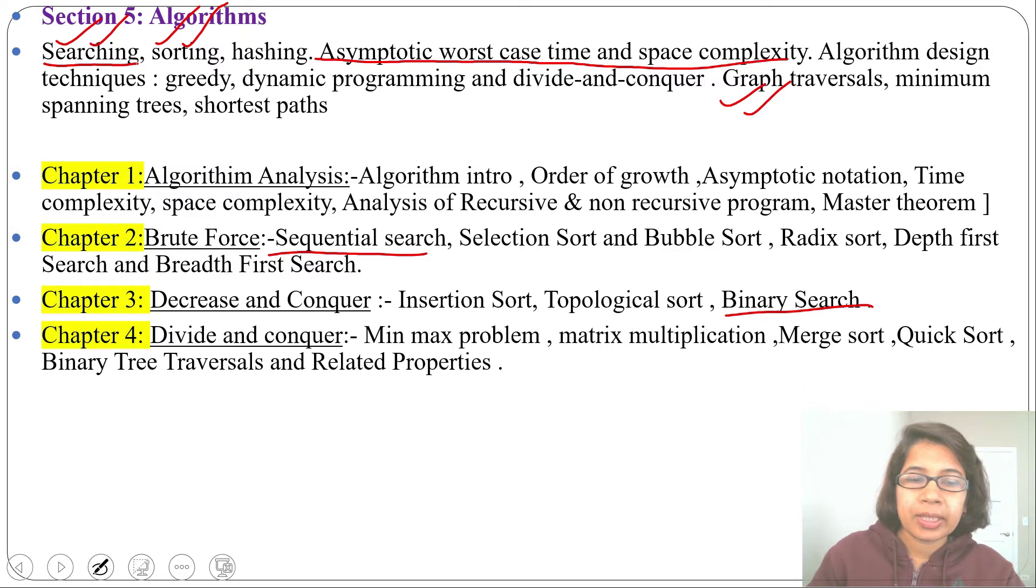Next Chapter 4 is Divide and Conquer. There I discussed Min Max Problem, Matrix Multiplication that comes under Divide and Conquer, Merge Sort, Quick Sort that comes under Sorting also Divide and Conquer, then Binary Tree Traversal and Related Properties that comes under Divide and Conquer.